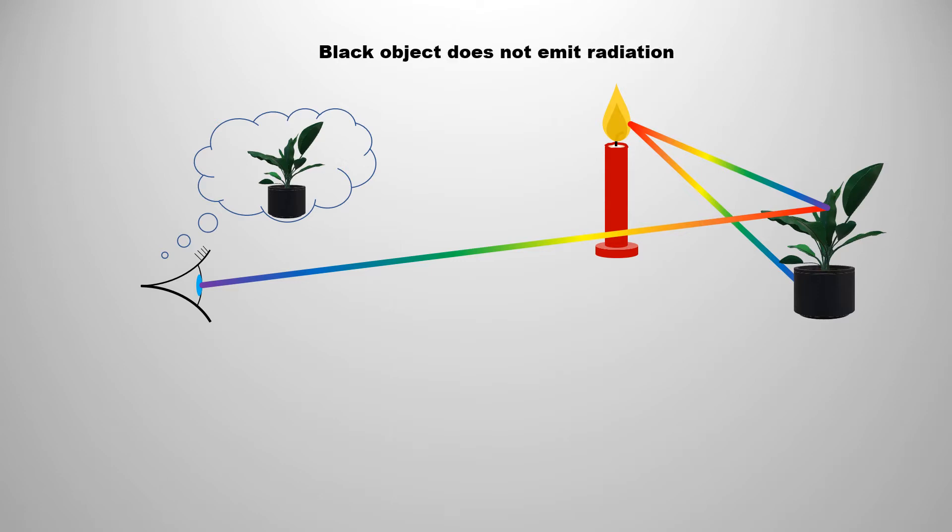This means that any object which is black does not transmit any kind of radiation. So what is the black body radiation? In this video of quantum mechanics, we will learn about black body radiation.